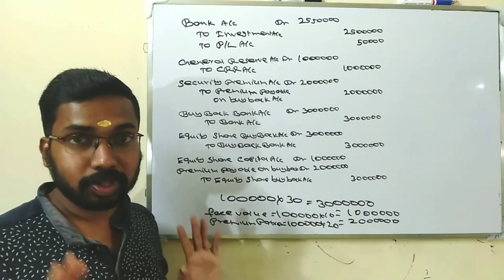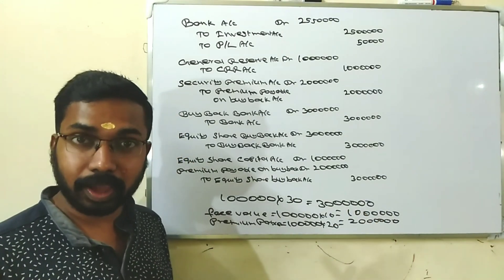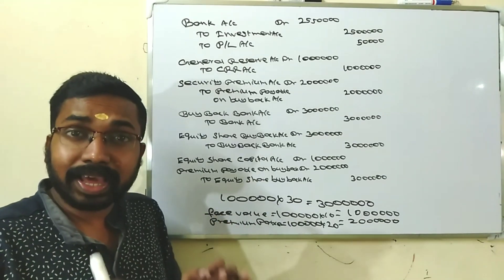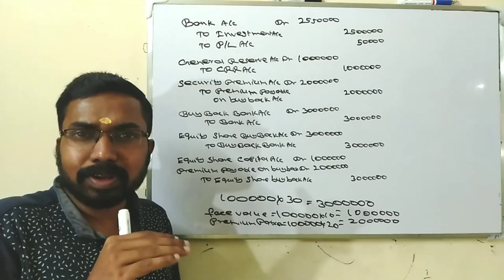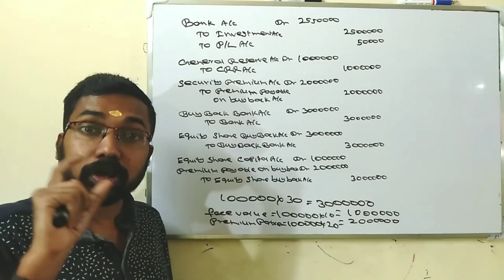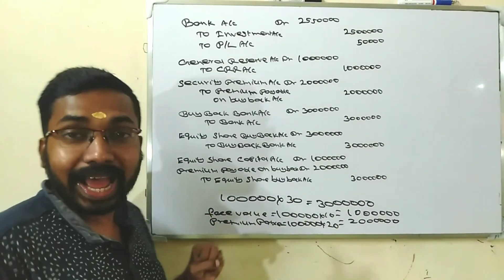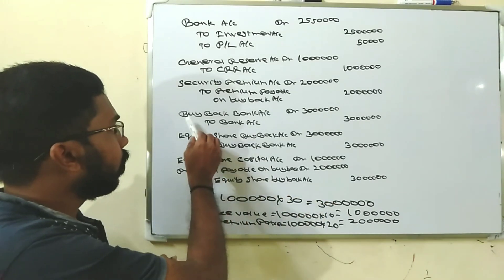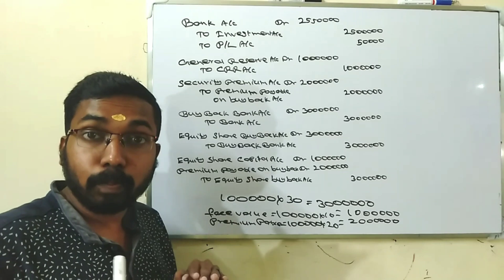Total Rs.30,00,000. We go to the buyback entry. First, Buyback Bank Account Dr to Bank Account: Rs.30 lakh rupees. Next, Equity Share Buyback Account Dr to Buyback Bank Account: Rs.30 lakhs. We open the relevant entry and separate the buyback bank account.